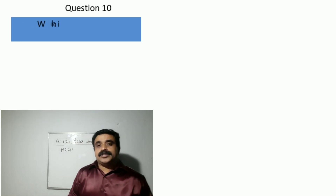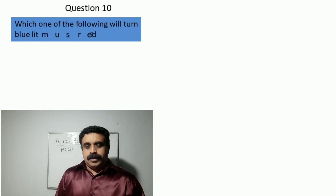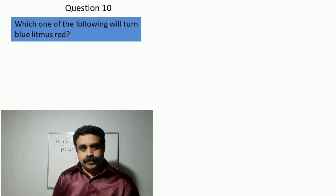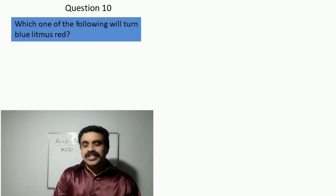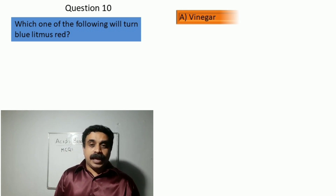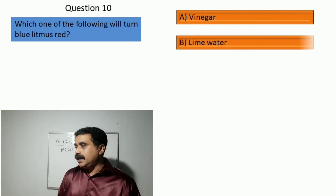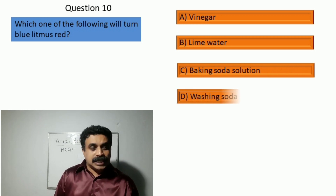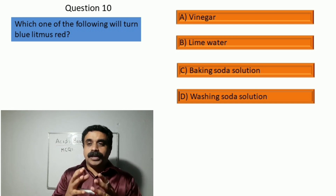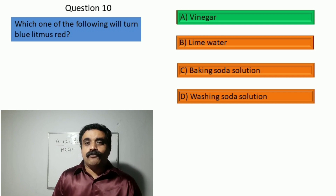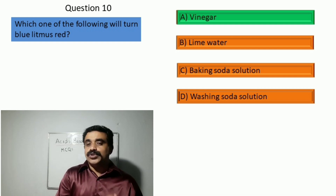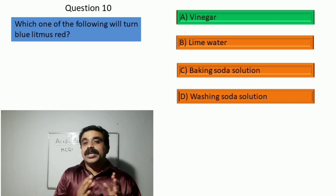Question number ten, the last one for this episode: which one of the following will turn blue litmus into red? Option A: vinegar, option B: lime water, option C: baking soda solution, option D: washing soda solution. The correct answer is option A, vinegar, which contains acetic acid. In an acidic solution, blue litmus turns to red.